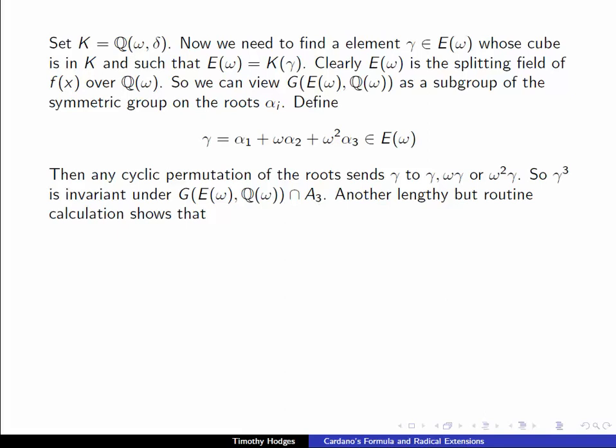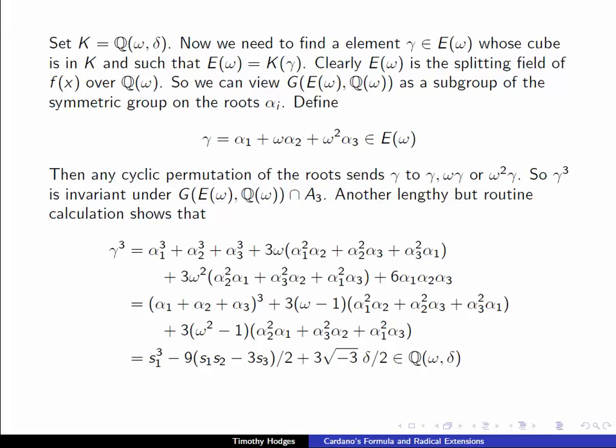So γ³ will be invariant under any element of the Galois group intersected with these cyclic permutations A₃. So that tells us that γ³ is in a smaller field, and a lengthy, again another lengthy but routine calculation tells us what γ³ is. It turns out to be this expression here, which is a combination of the elementary symmetric functions, the sᵢ which are rational, the square root of -3 which of course is expressible in terms of ω, and δ. So this belongs to ℚ(ω,δ).